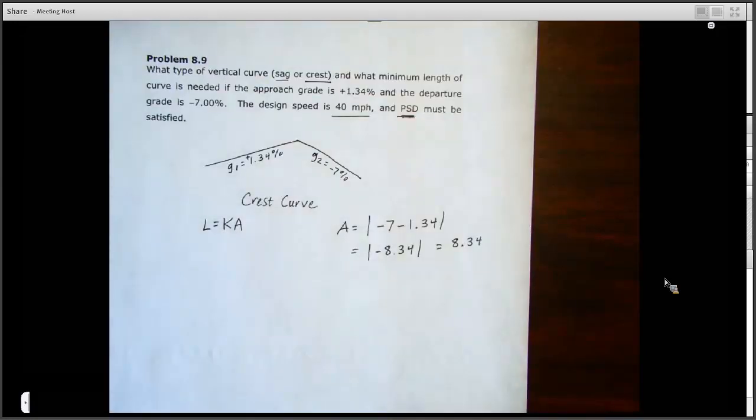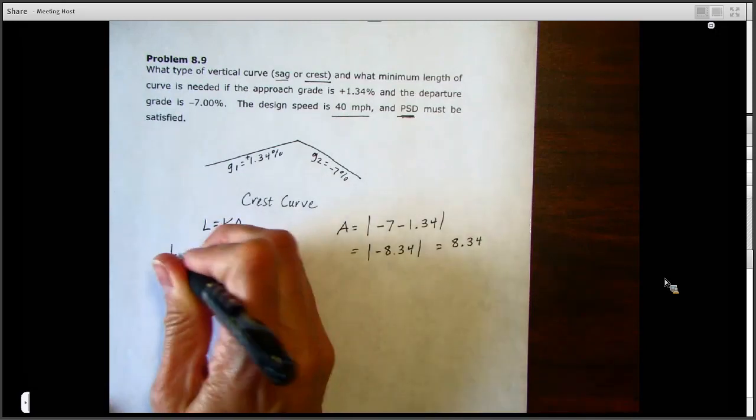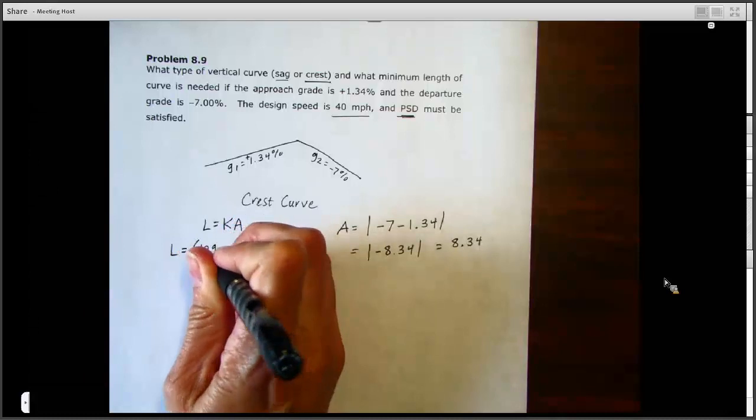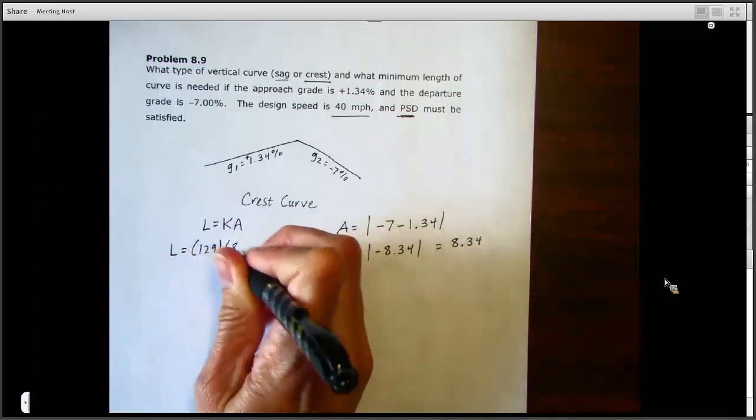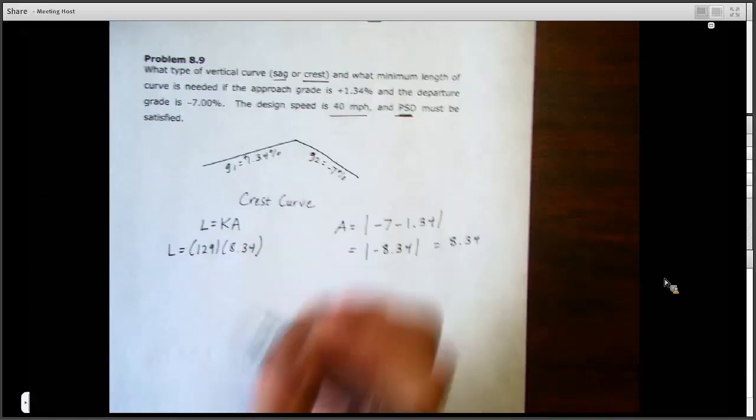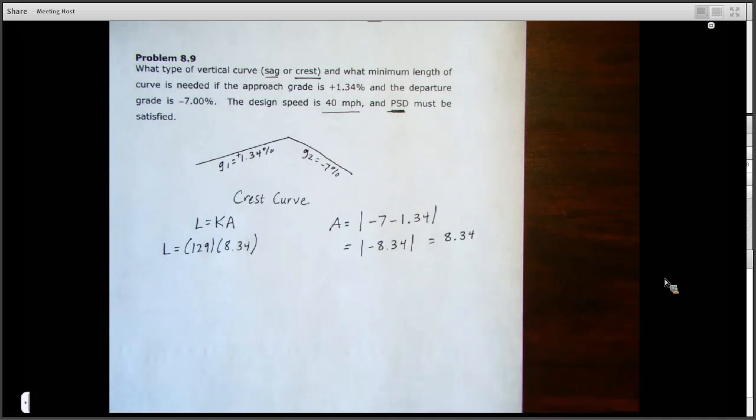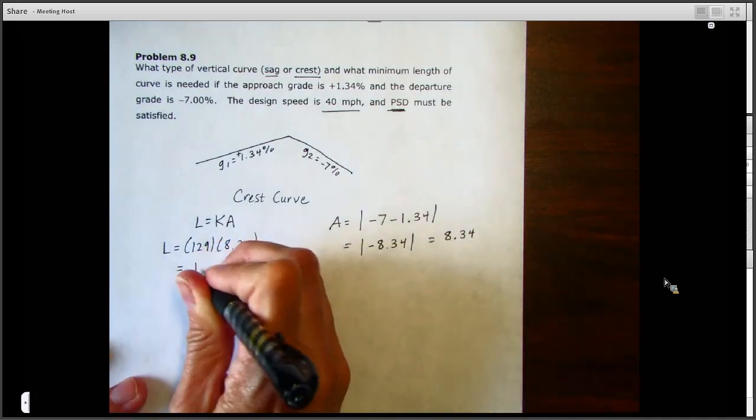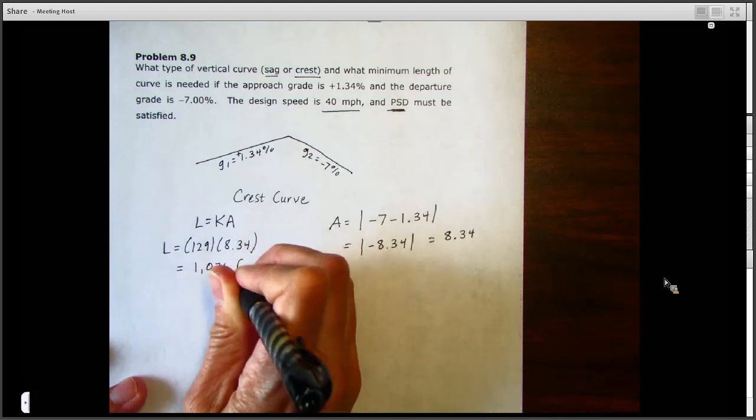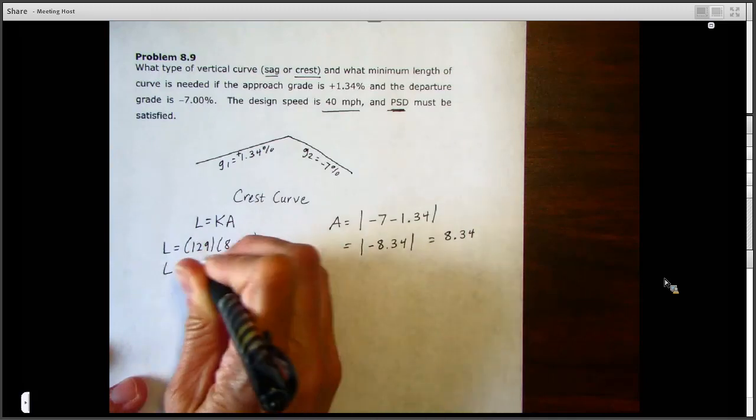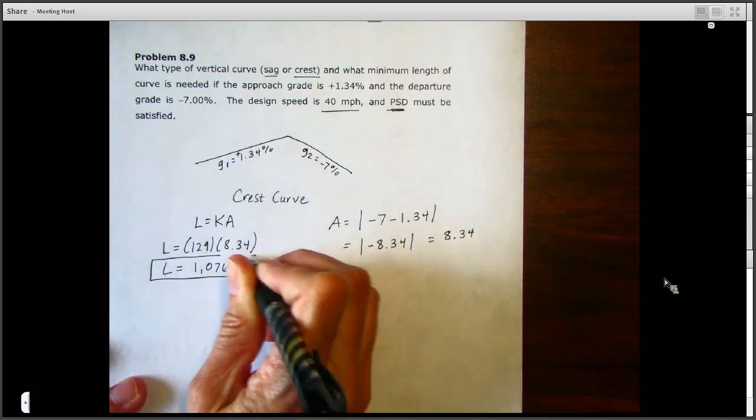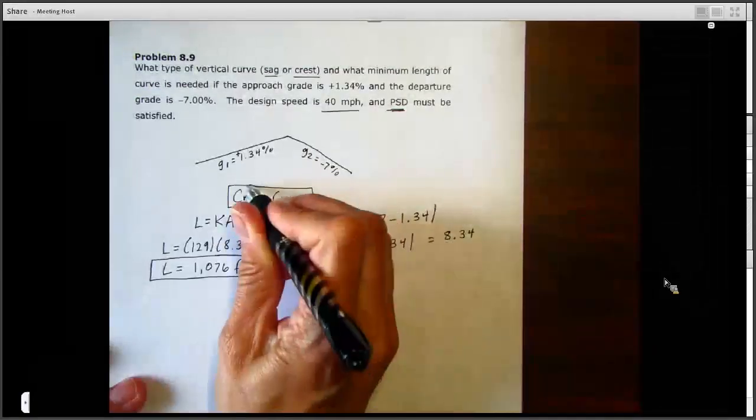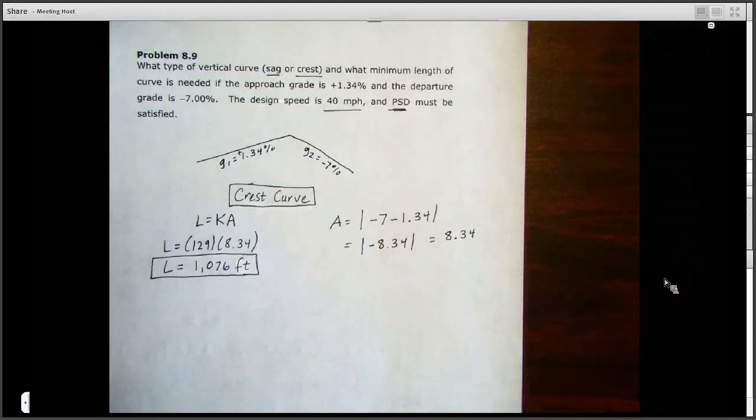So we just plug that into our formula L equals K times A. L is going to equal that 129 times our 8.34. We leave that in percent form, and if we do that math out, we'll go to the nearest whole number, we'll get 1076 feet for that L. So 1076 feet and it is a crest curve.